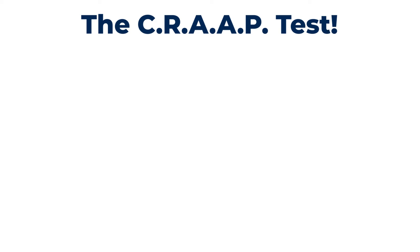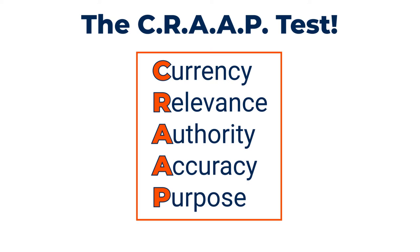One of our favorite and most thorough methods to determine the reliability of online resources is the CRAAP test. CRAAP is an acronym and stands for Currency, Relevance, Authority, Accuracy, and Purpose — all important factors to consider when vetting an information resource.